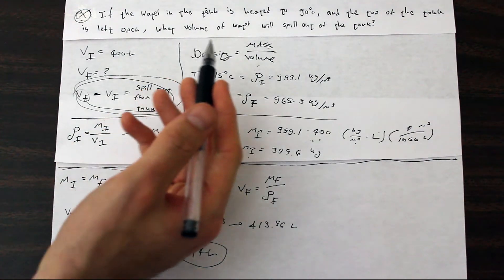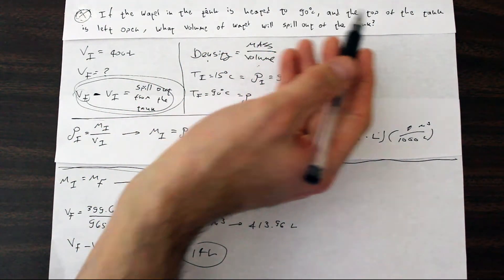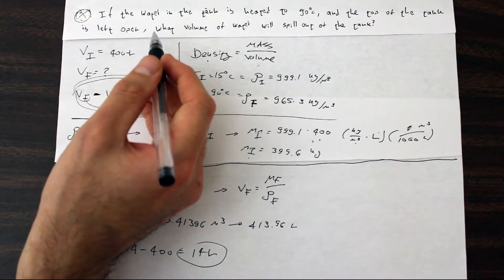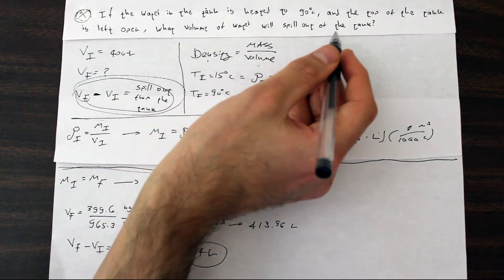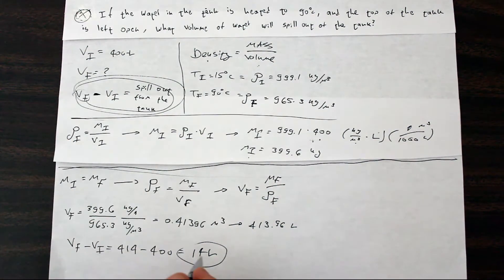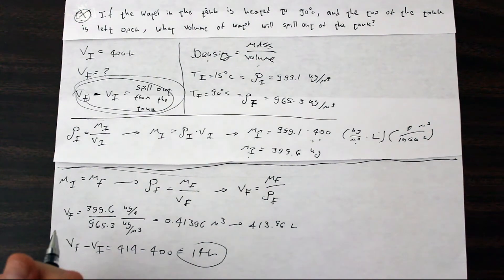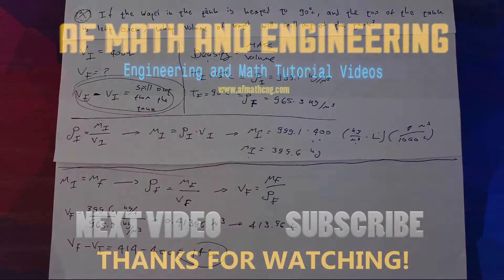If the water in the tank is heated to 90 degrees Celsius and the top of the tank is left open, 14 liters of water will spill out of the tank. Liters is good because they are asking for the answer in volume and that is our final answer.